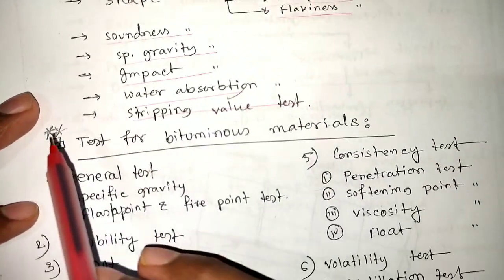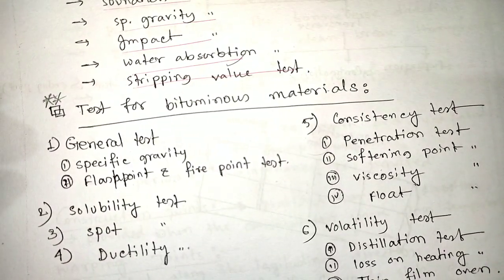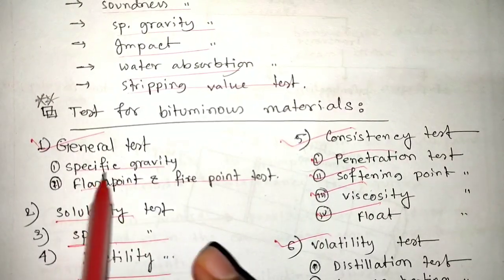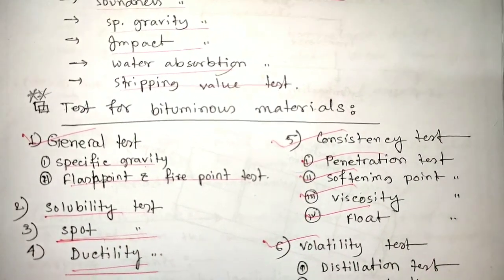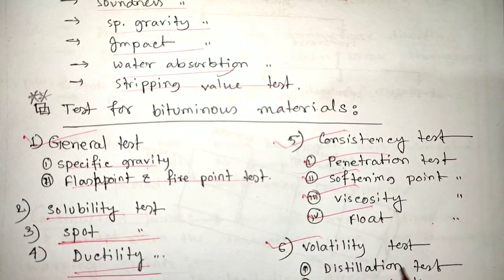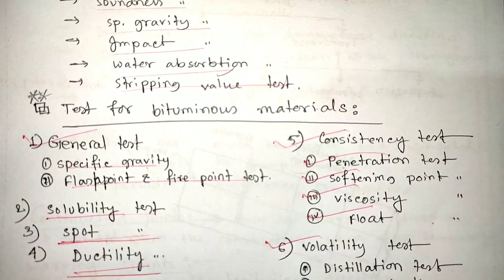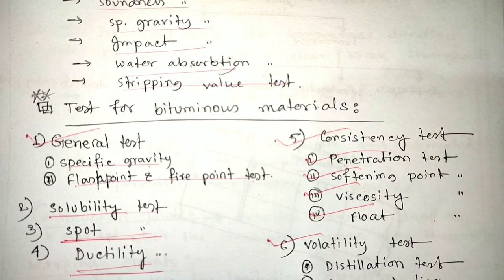For bituminous materials, there are general tests like specific gravity, flash point, fire point, and solubility test. Consistency tests include penetration test, softening point, and viscosity. Other tests are volatility test, distillation test, loss on heating, and thin film oven test. These are the key tests for bituminous materials used in flexible pavement construction, including prime coat, tack coat, and seal coat applications.